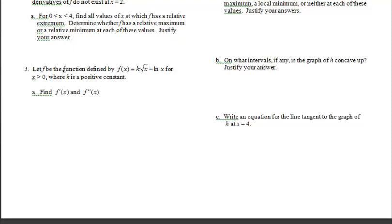Take a moment and read through question number three. Number three says let F be a function defined by F of X equals K times the square root of X minus natural log of X for X greater than zero, where K is a positive constant. So we know K is a positive constant multiplier.